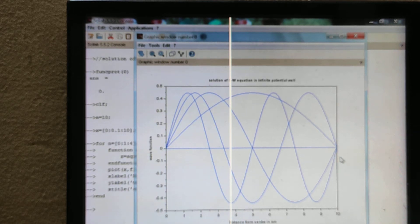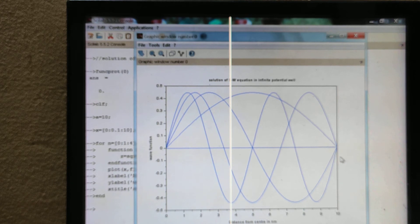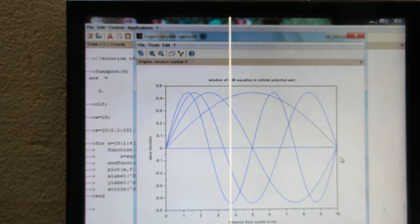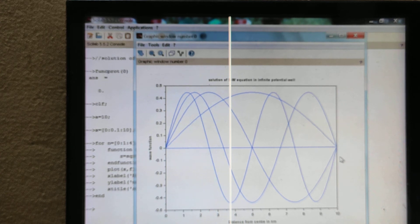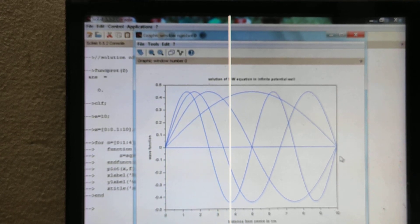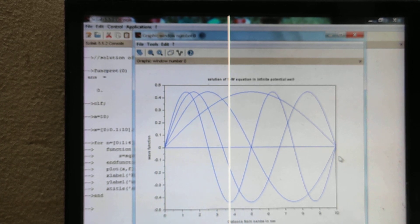You can take different values for n and also different values for a. This is all for our Schrodinger equation for infinite well potential. Thank you.